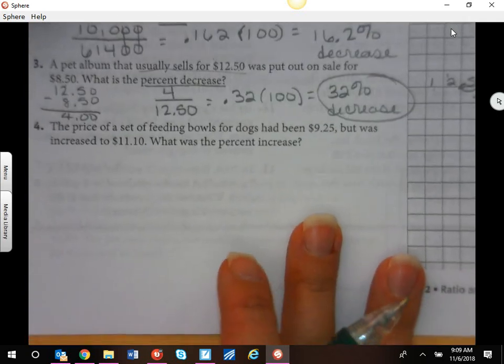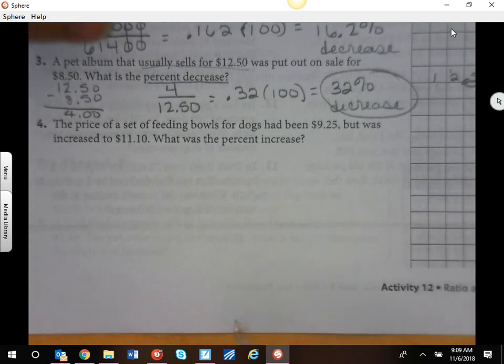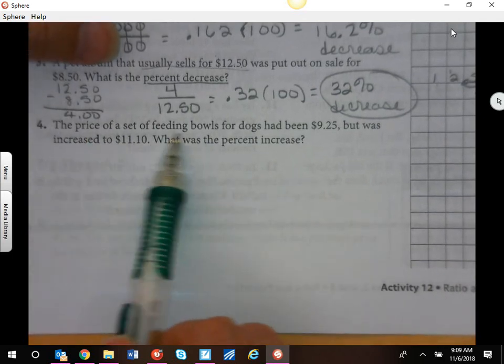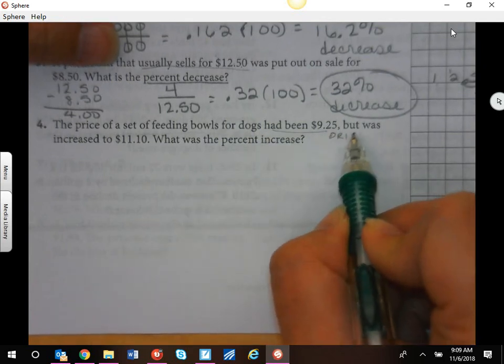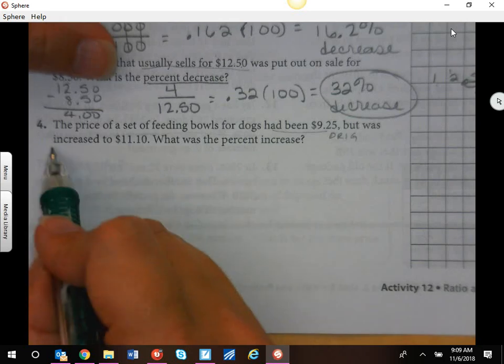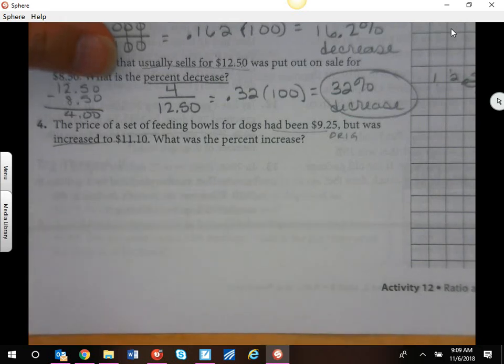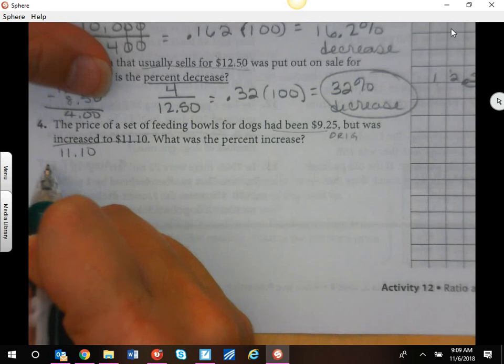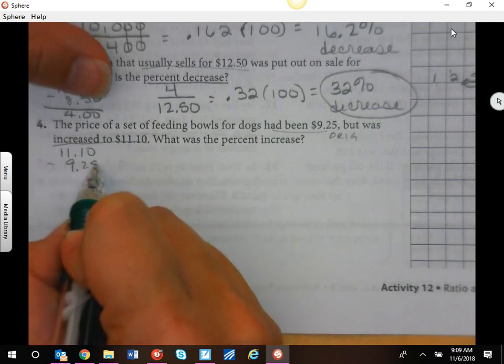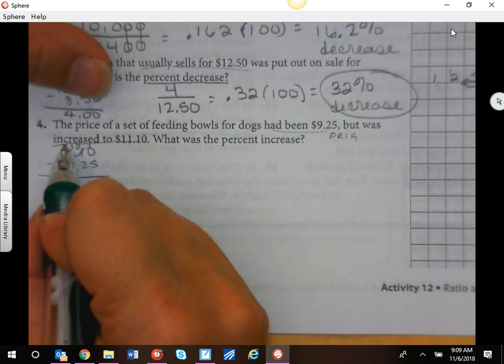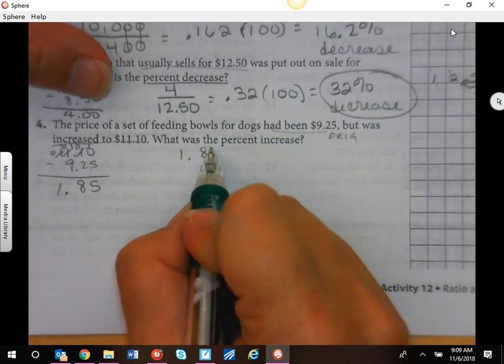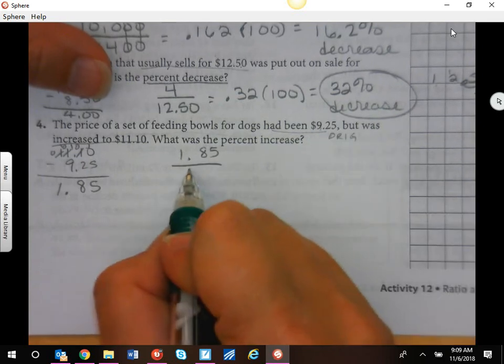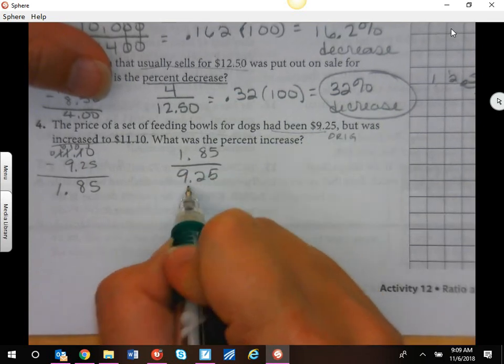You're just using that same method over and over. The price of a set of feeding bowls for dogs had been $9.25. That's our original. But it was increased, it went up. So we're still going to have to subtract these. Put the bigger one on top. That's $11.10 minus $9.25, and $1.85 is the difference.